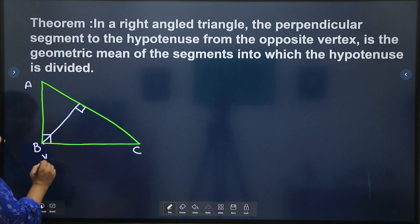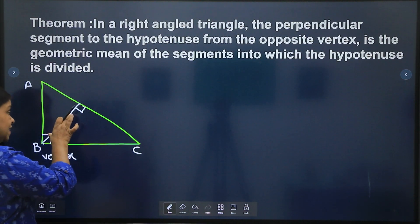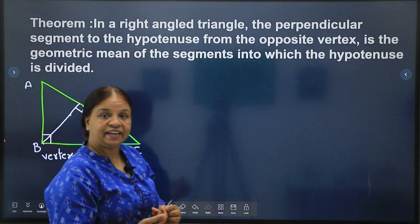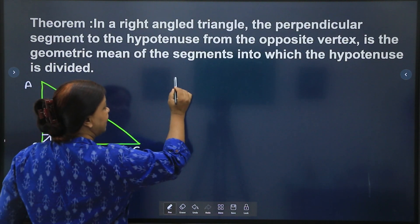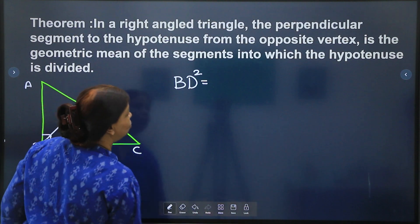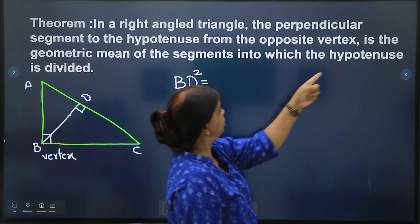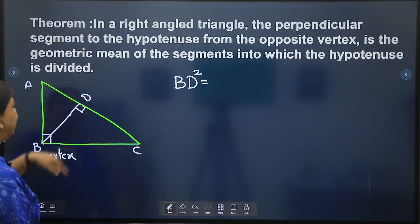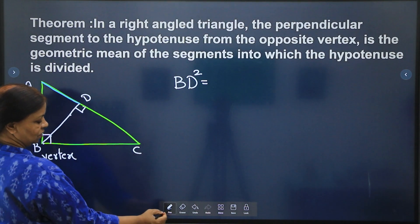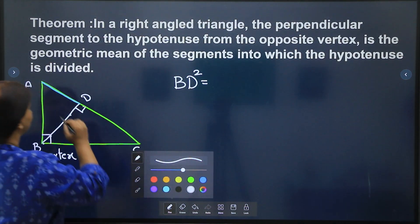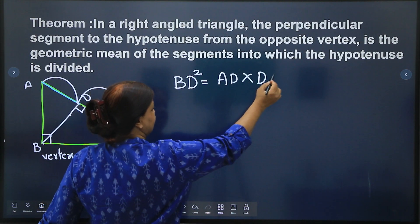opposite is B. This is the vertex children which is opposite to AC and this vertex will be geometric mean. Geometric mean of the segments means let me take this point D. Means BD square is equal to geometric mean of the segment into which the hypotenuse is divided. Hypotenuse is divided into AD